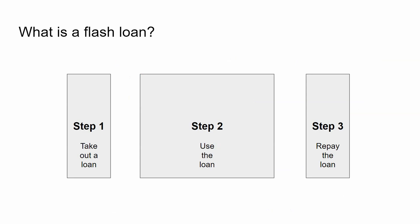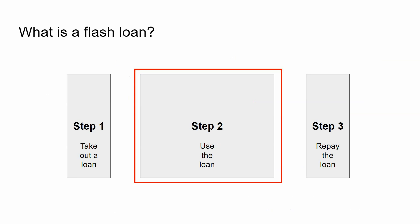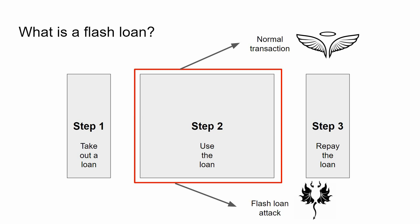If we look back at the schematic step chart of how a flash loan takes place, it's really the second step — the stuff you do in between the loan being issued and the repayment — that determines whether a flash loan is benign or malignant. It could be a normal part of a financial settling process, but if used with malicious intent to drain assets through manipulation, then we term it a flash loan attack.